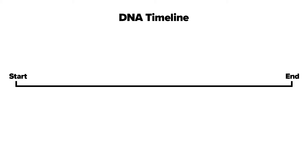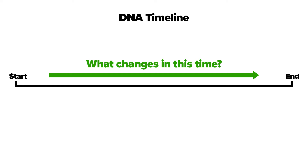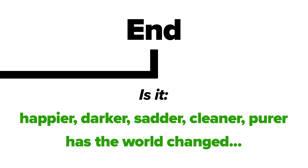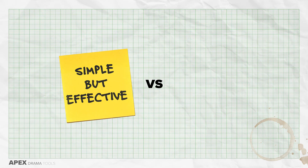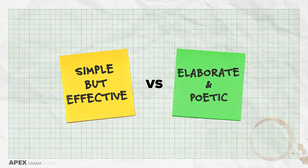How is the environment of the play different at the start to how it is at the end? What do you think has changed? Is it happier, darker, sadder, cleaner, purer? Do you think the world has changed? When Adam is revealed in Part 3, how are you going to support this big dramatic moment with design? Are you going to use specialised makeup or costume?